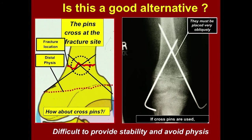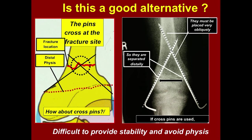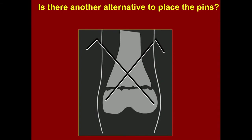With crossed pins, you need lots of separation at the fracture site distally. It's a little difficult to do, and you also have the problem of pins sticking out of the skin. Another way is antegrade pins crossing above the fracture site — that's another method, though a little tricky.